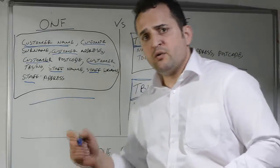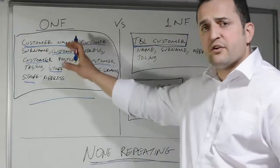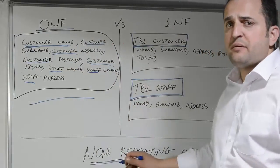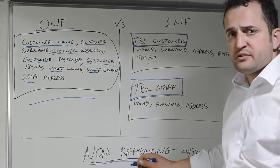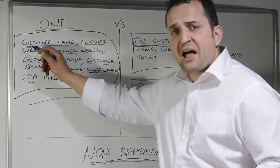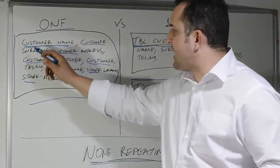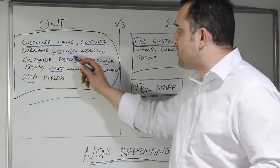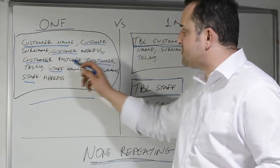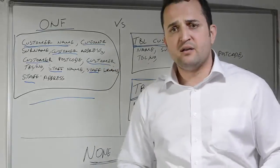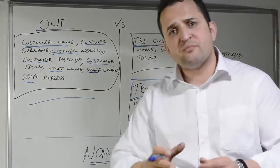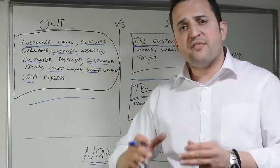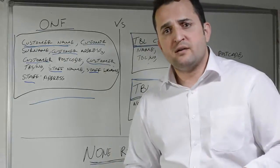The rule we need to follow in order to convert 0NF to 1NF is non-repeating attributes. So when we see an attribute repeating — like customer name, customer surname, customer address, customer postcode, customer telephone number — there is an attribute that keeps repeating, and that attribute is the word 'customer'.